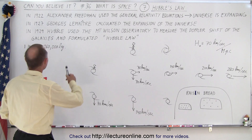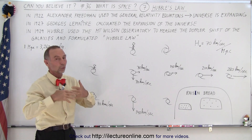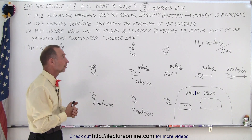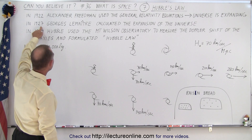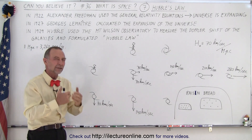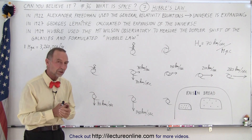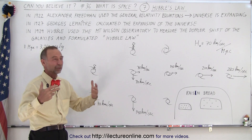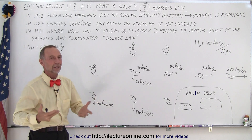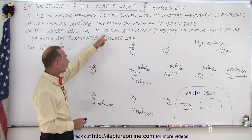Alexander Friedman, back in 1922, used the equations of general relativity to show that the universe was indeed expanding. In 1927, a Belgian priest named Georges Lemaître also calculated the expansion of the universe using his own set of equations. He published his work, but in French in a relatively unknown journal, so it never really got out and people didn't realize he had done this work.